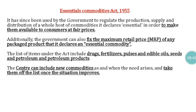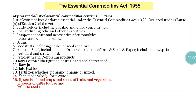The central government can include a new commodity under the Essential Commodities Act at any time, and once the situation normalizes, they can remove it from the list. Currently, 15 materials are covered, including cattle feed, oil cake, coal and coke derivatives, automobile components, cotton and textiles, drugs, iron and steel, petroleum products, raw cotton, raw jute, jute textiles, fertilizers, seeds of food crops, seeds of fruits and vegetables, and jute seeds — the latest addition to the list.